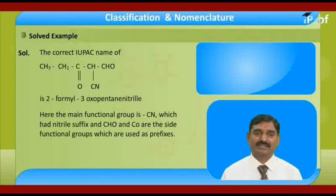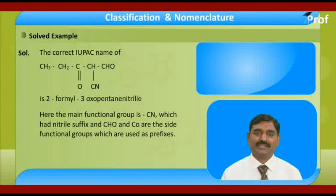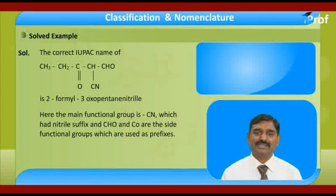The correct IUPAC name is 2-formyl-3-oxo-pentanenitrile. Note that CN's carbon is also counted in the main chain. In nitrile, the carbon can be easily counted. But in the case of isocyanide, the NC carbon cannot be included in the main chain because nitrogen comes in between the carbon chain.